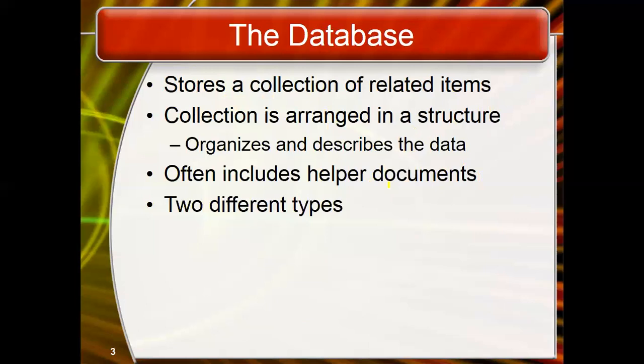For example, you are storing the information of a single product, so in the record you will input all the required data information of that product, and it will be arranged in some specific structures. This helps the user get all concerned information in a single record. There are several types of databases — relational databases, cloud databases, graphical databases, image databases — but basically there are two main types: flat file databases and relational databases. These are the basic databases from which other databases are created.